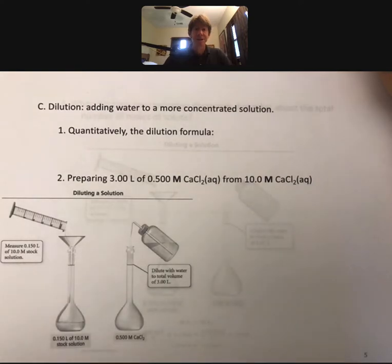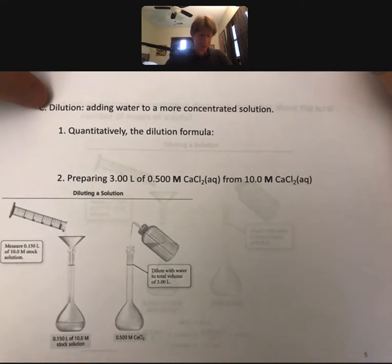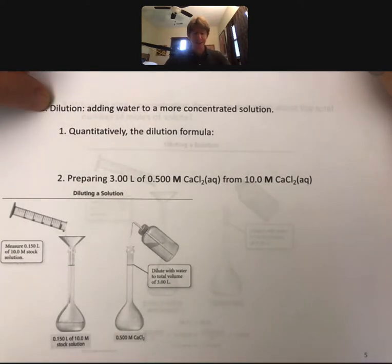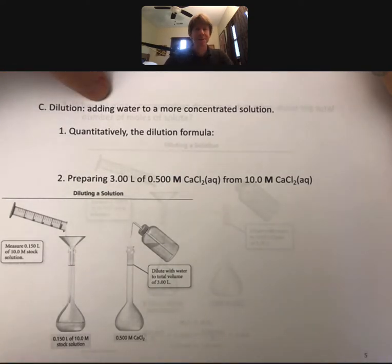The second type of solution calculation is dilution calculations. Dilution is simply adding water to a more concentrated solution. When you do that, it will become more dilute, less concentrated.